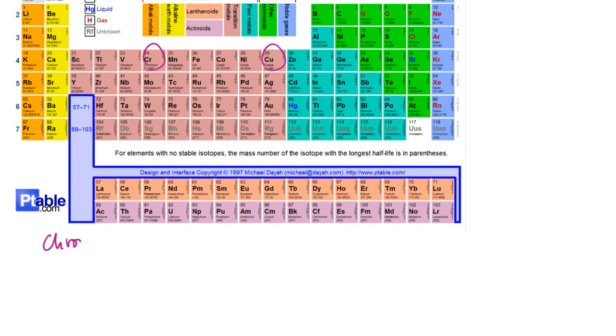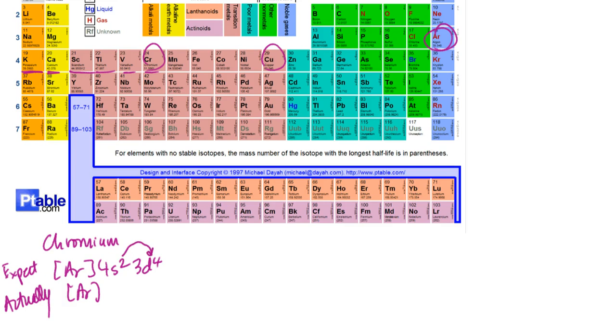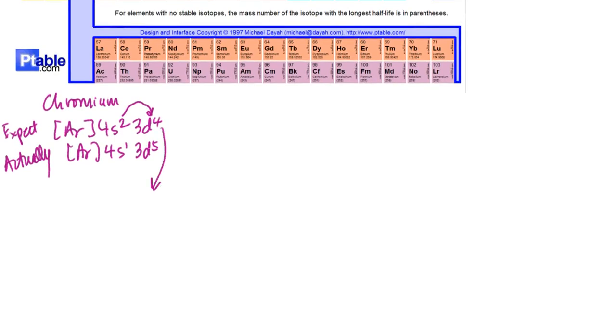I'm going to take chromium first. I'll go ahead and write the noble gas notation. So argon precedes chromium. This would be argon. And we would expect that the configuration would be 4s2 and then 3d, 1, 2, 3, 4, 3d4. But that is not actually what we get. What we actually get is one electron from the s sublevel is going to jump over to the d. So that would give me 4s1, 3d5.